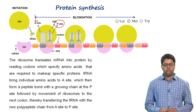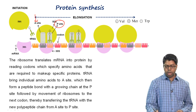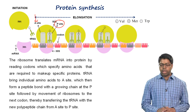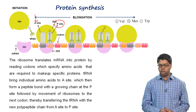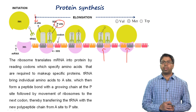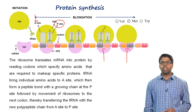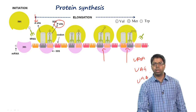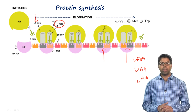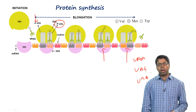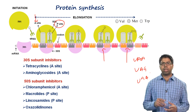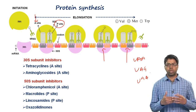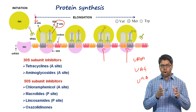The tRNA brings an amino acid such as valine, which forms a peptide bond with the peptide already present at the P site. The empty tRNA is released, and the ribosome moves from one codon to the next, transferring the tRNA with the growing polypeptide from A site to P site. This continues until a stop codon — UAA, UAG, or UGA — is encountered. Antibiotics act at specific sites on the ribosome: 30S inhibitors include tetracyclines and aminoglycosides; 50S inhibitors include chloramphenicol, macrolides, lincosamides, and oxazolidinones.